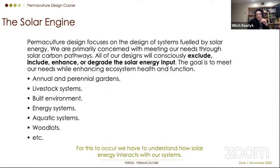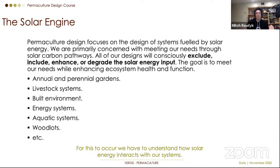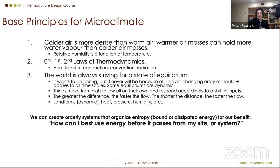When it comes to microclimates, what we're trying to do is exclude, include, enhance, or degrade the solar energy input. As Rob has discussed, everything has the right to garden and everything does garden. What we are doing is gardening sunlight — channeling it into food or livestock systems, built environments, energy systems, or aquatic systems. Through thinking about this, I've come up with three base principles we need to consider when designing.